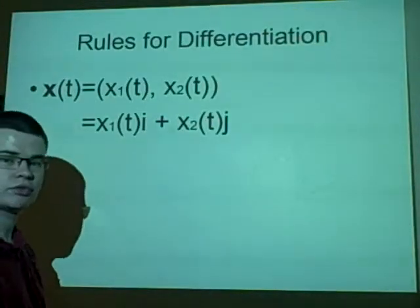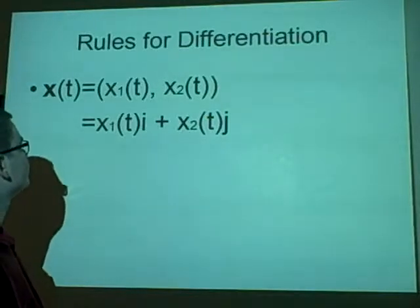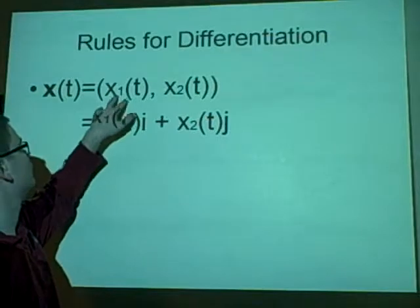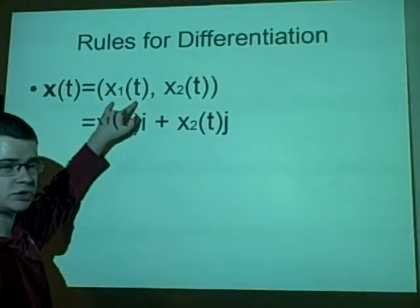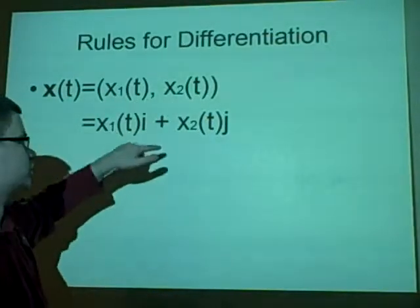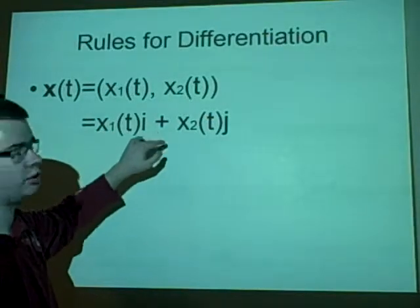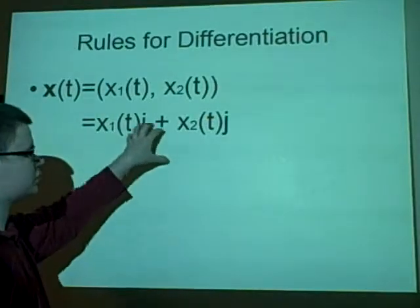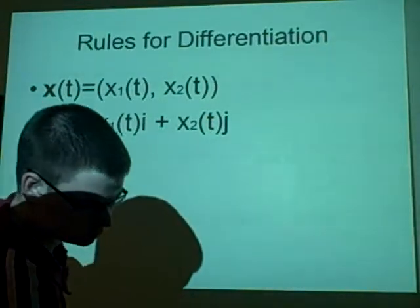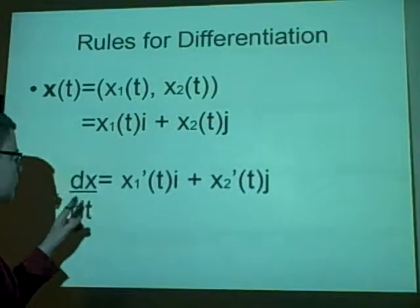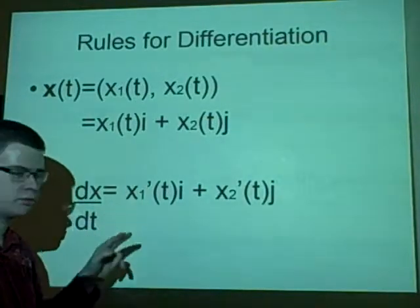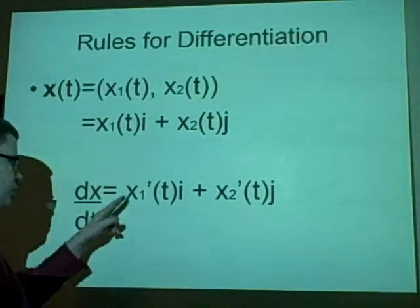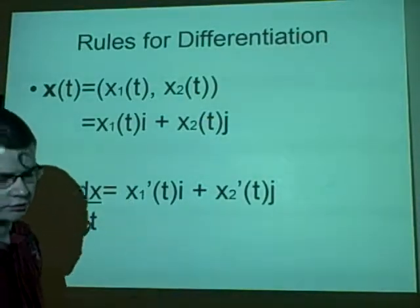Now, rules for differentiation of vectors. We have a vector r(x), where it's between two parts x₁ and x₂. We can split this up to say x₁i plus x₂j. And what we do here is we just differentiate each part separately. So dx/dt is x₁'i plus x₂'j. And prime, if you don't know, is just shorthand for the derivative.